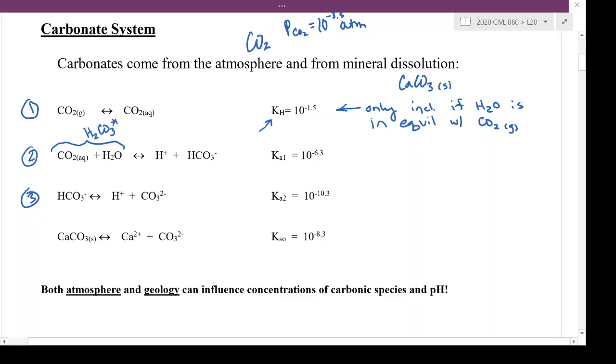And the first weak acid reaction: carbonic acid donates a proton and forms bicarbonate. Bicarbonate can subsequently release another proton and form carbonate. So these are our weak acid system reactions.